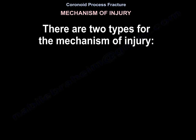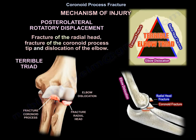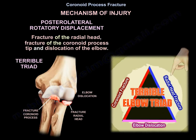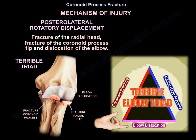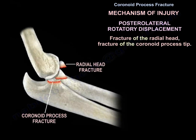There are two types of mechanism of injury. The first is a posterolateral rotatory displacement that gives us the terrible triad: fracture of the radial head, fracture of the coronoid tip, in addition to dislocation of the elbow.